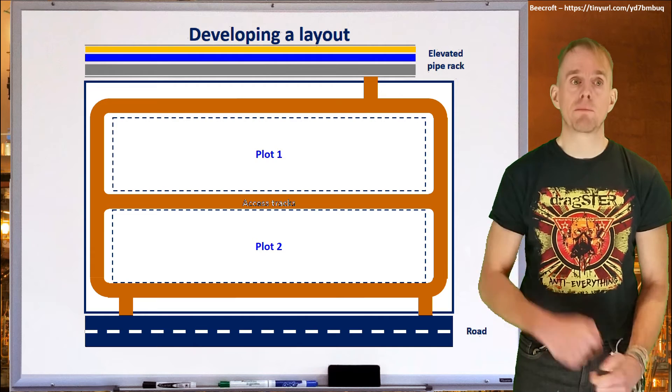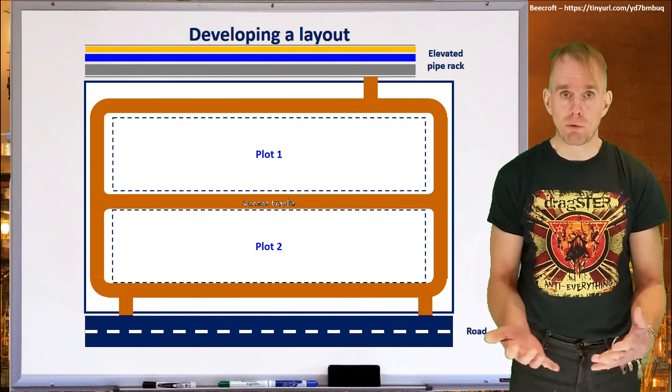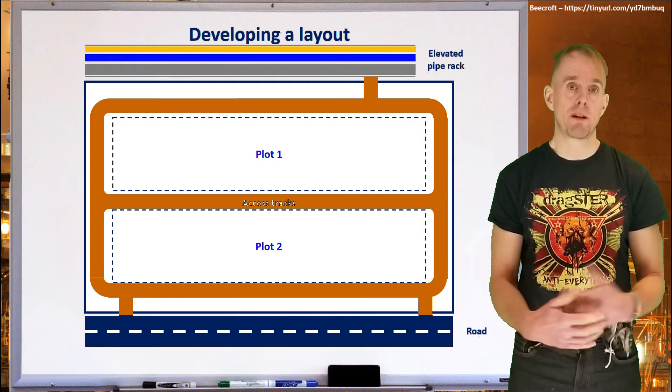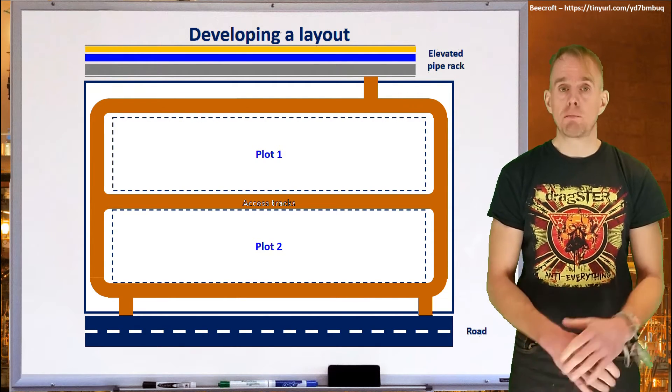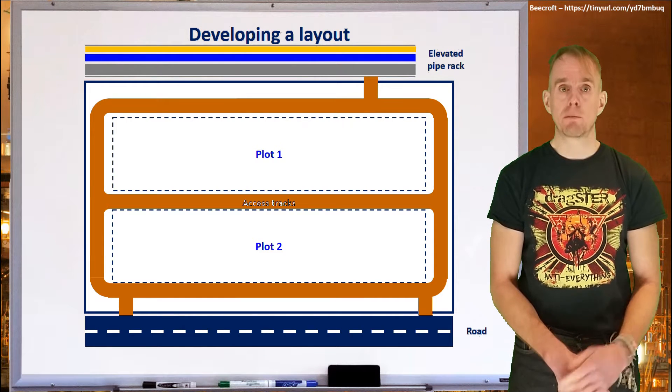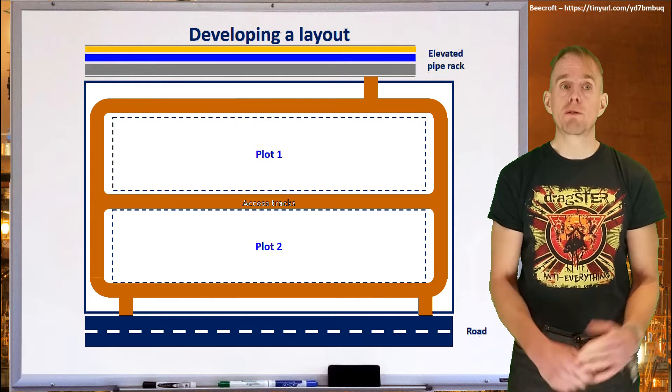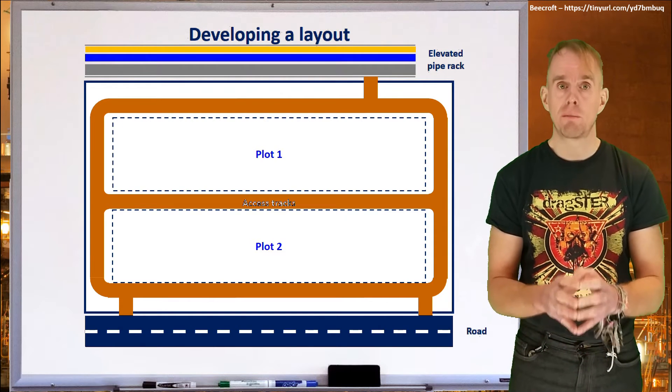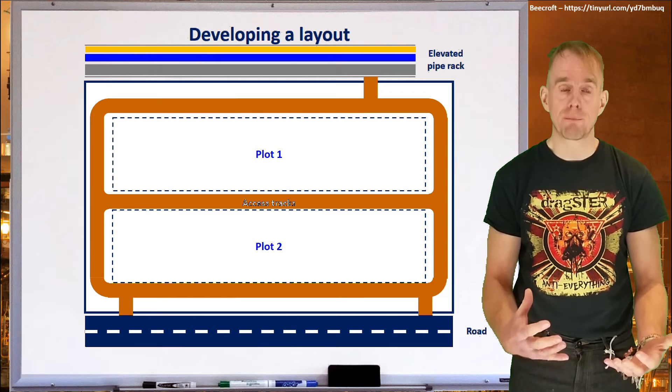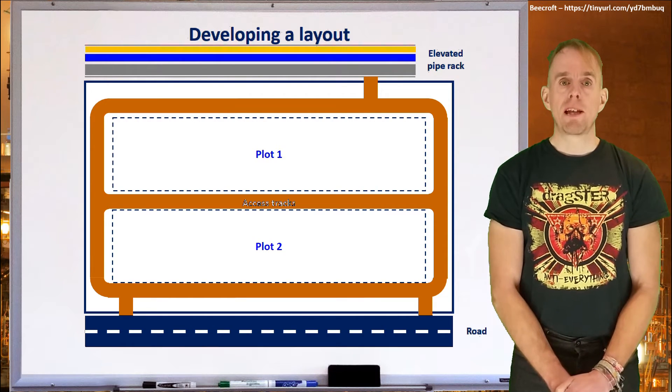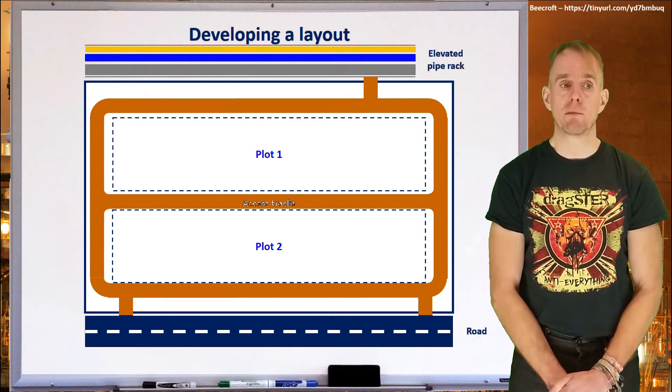And so here on the whiteboard I've illustrated two plots. Remember what we said about plots. They need access from all four sides. They need to be no bigger than 100 metres by 200 metres for fire reasons. And on these plots we might, for example, put parallel trains of plant equipment, or we might have grouped together high temperature and high pressure equipment on one plot, and equipment that is less hazardous on the other plot. So we can then think how to physically lay out these segregated items of equipment.